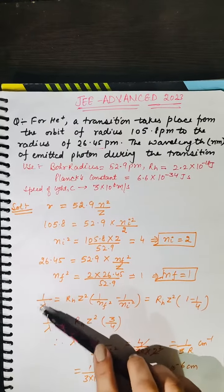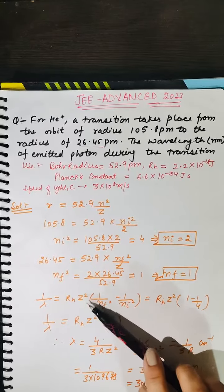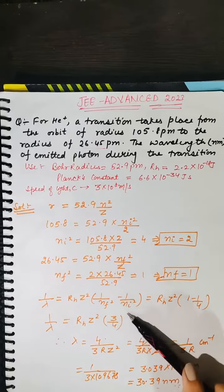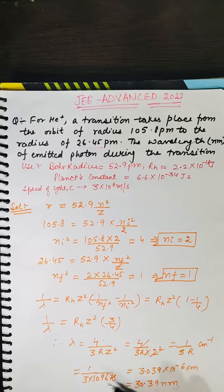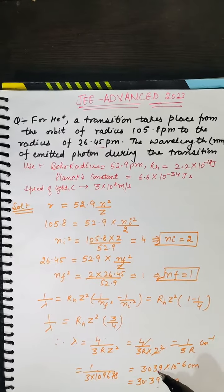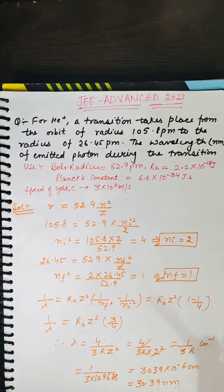We know the formula that 1 over wavelength equals the Rydberg constant into z square, 1 by n_f square minus 1 by n_i square. When you put in all the values using this formula in centimeter inverse, our value is 30.039 into 10 to the power minus 6 centimeters.